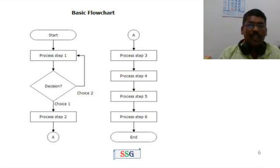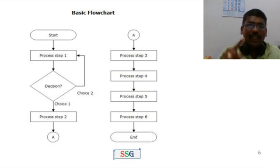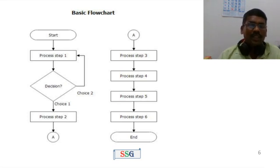Only one flow line is used with the terminal symbol — just one line for finishing. Write briefly and precisely within each standard symbol using simple English. For a connector, use a round shape with a letter such as 'A', then continue on the next page with the same connector symbol 'A'. Process steps 3, 4, 5, 6 lead to the end.